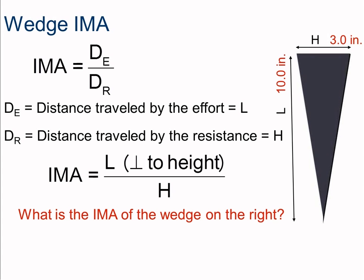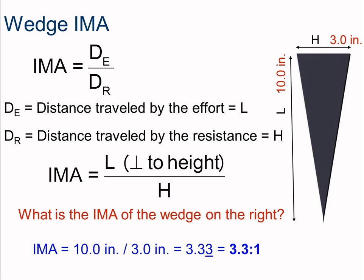With a length of 10 inches divided by a height of 3 inches, we get 3.333, so our mechanical advantage is 3.3 to 1 — still greater than one, which works very nicely.